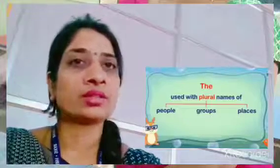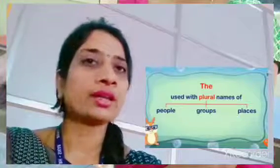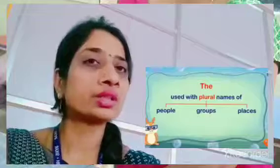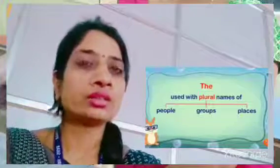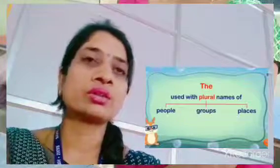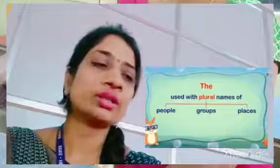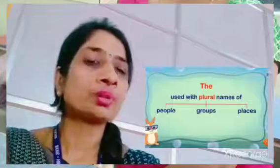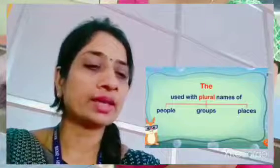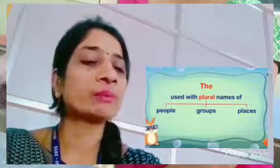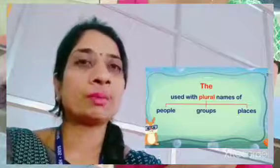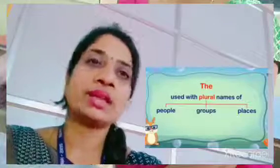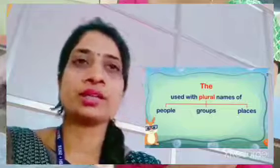While 'a' and 'an' are used only with singular countable nouns, 'the' is used for both singular and plural. So for plural names — whether it is the name of some people, a group, or a place — we also use 'the' there.